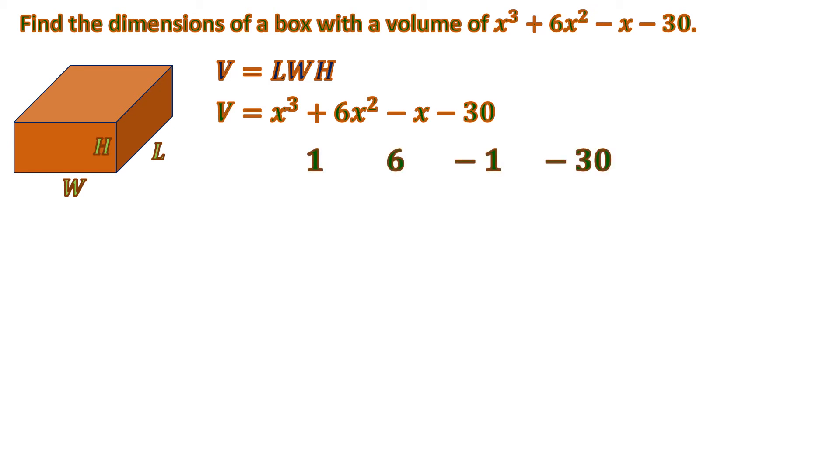Let us factor using synthetic division. We can use rational root theorem to lessen the options. I'll put one of the roots to save time which is positive 2. So let's put 1 and 2 times 1 is 2, 6 plus 2 is 8, 8 times 2 is 16.